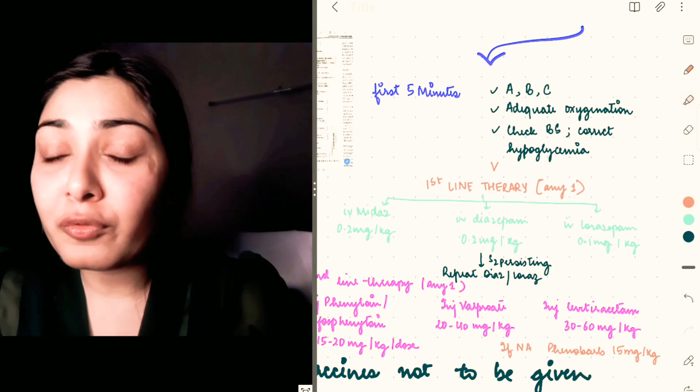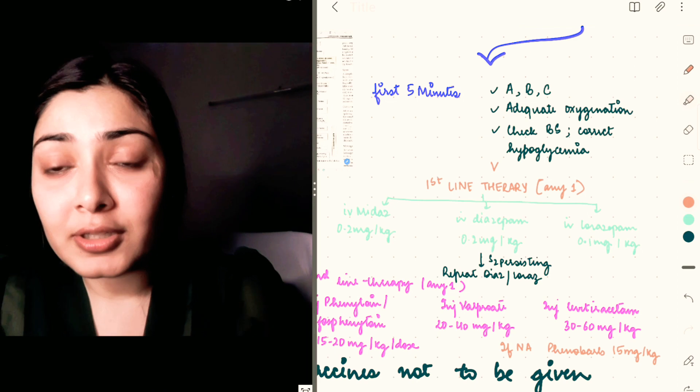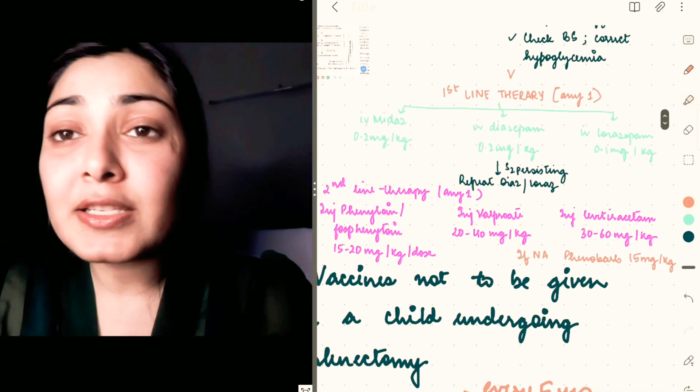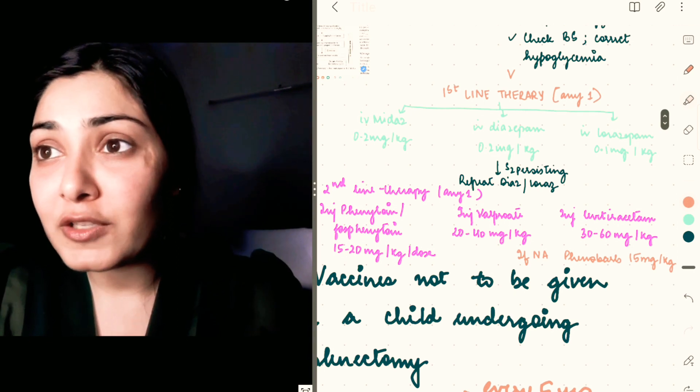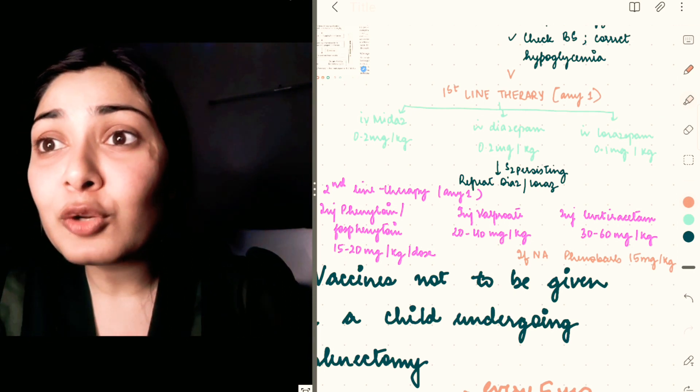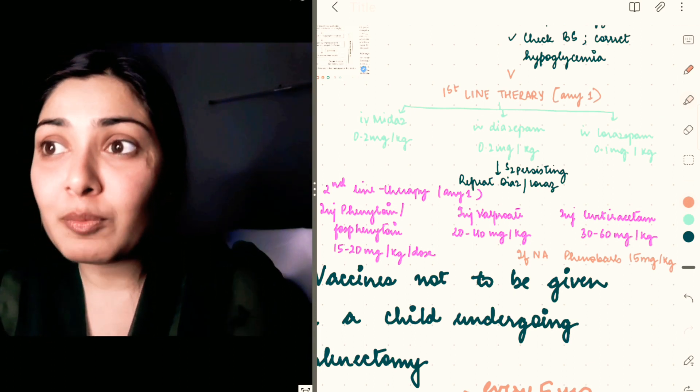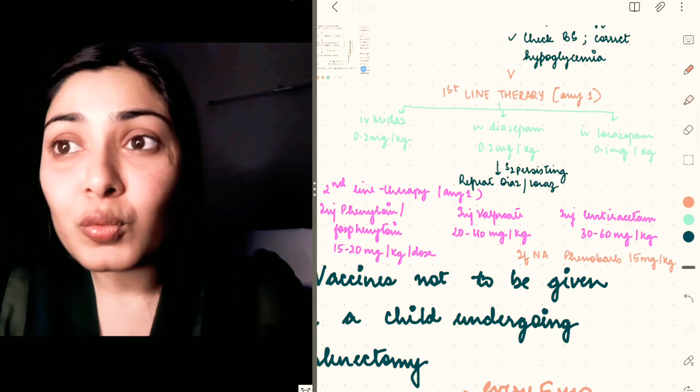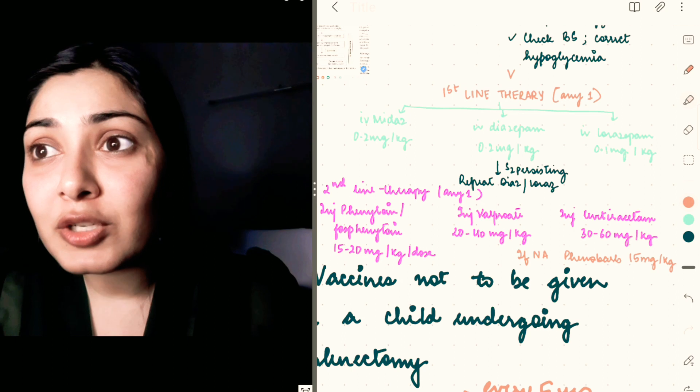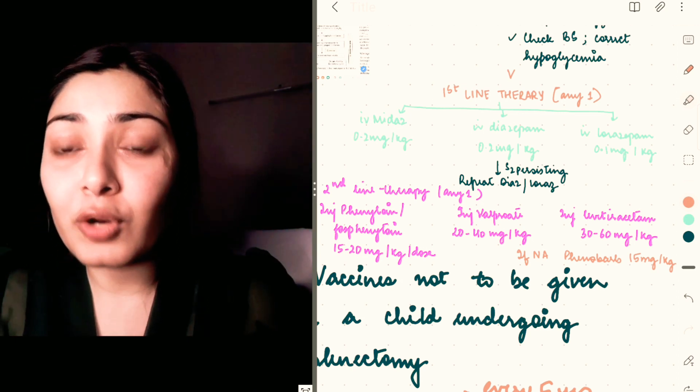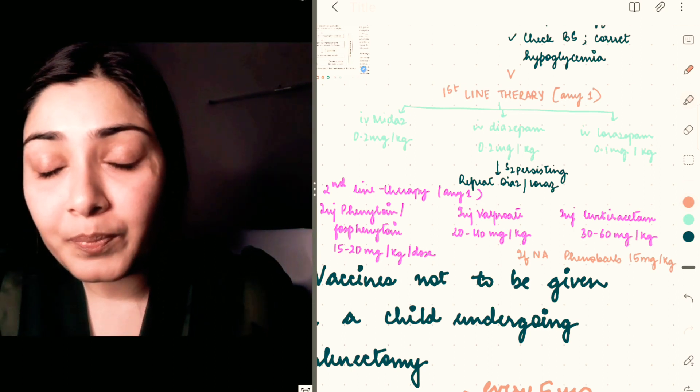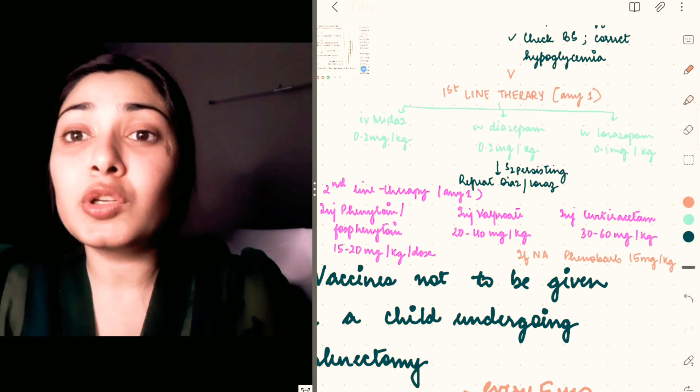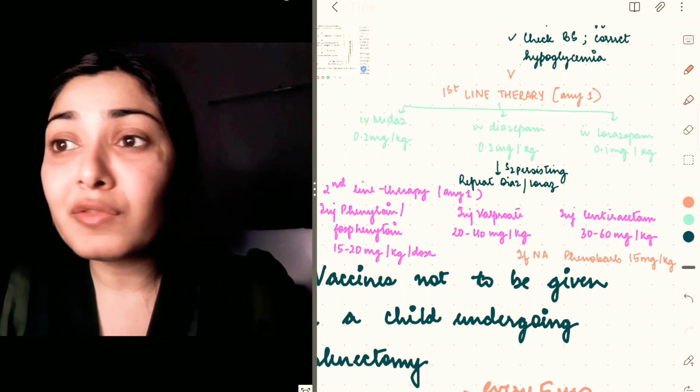If still the seizure is persisting, you give benzodiazepine. The first-line therapy includes IV midazolam, diazepam, or lorazepam. You can give any one of these. The doses are 0.2 mg/kg, 0.2 mg/kg, and for lorazepam it is 0.1 mg/kg. You can repeat the dose after six minutes if the seizure is persisting.